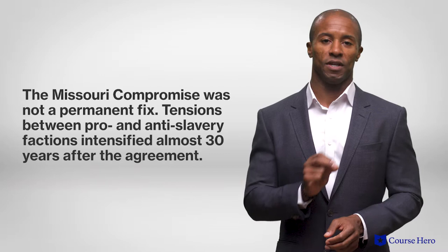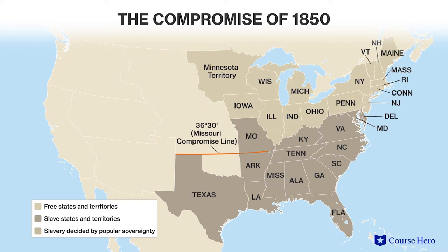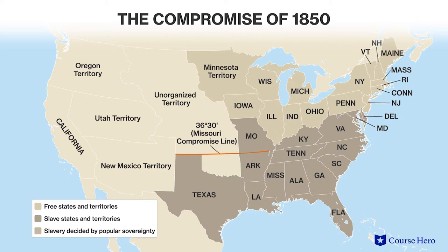The Missouri Compromise was not a permanent fix, however. Tensions between pro- and anti-slavery factions came to a head again nearly 30 years later. Texas entered the Union as a slave state in 1845, and three years later, the United States gained extensive territories from Mexico following the Mexican-American War. When California petitioned for statehood as a free state in December 1849, the question of how to manage the spread of slavery reemerged.